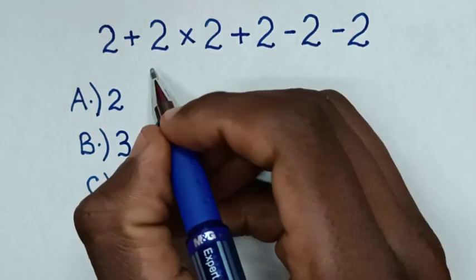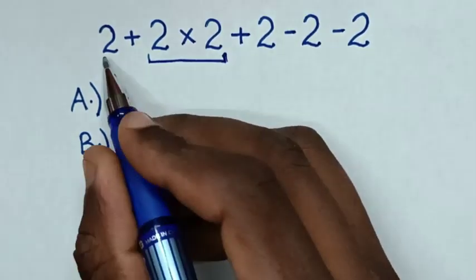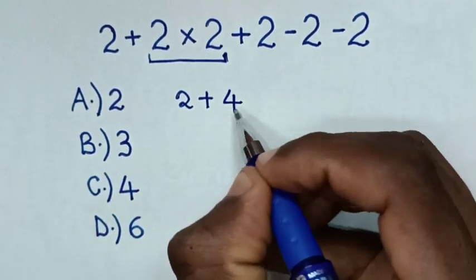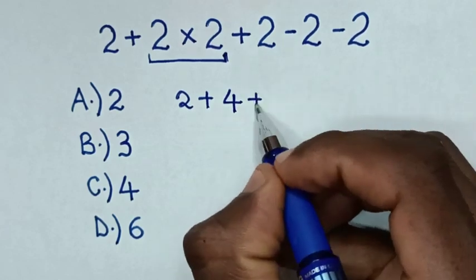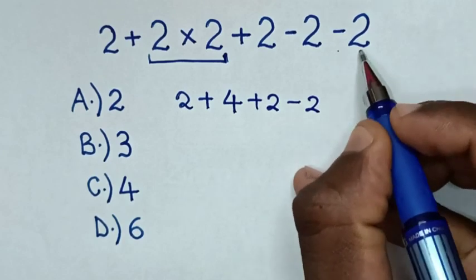So first we'll start to deal with this multiplication. Then it will be 2 plus 2 times 2 is 4, then plus 2 minus 2 minus 2.